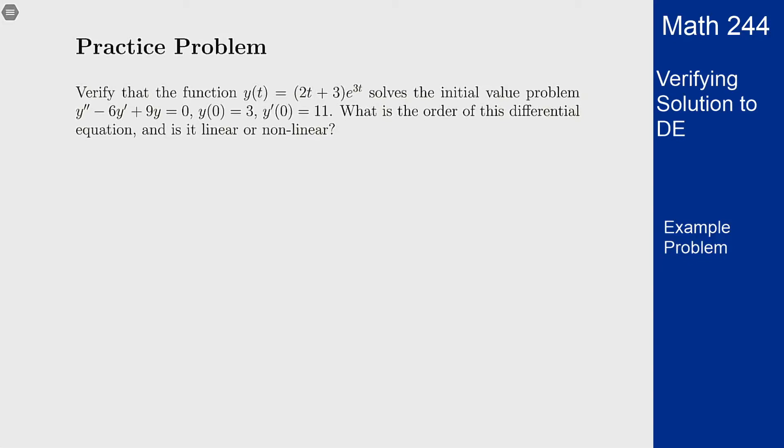In this example we want to verify the function y(t) = (2t + 3)e^(3t) solves the initial value problem y'' - 6y' + 9y = 0 with y(0) = 3 and y'(0) = 11. Now we need to say what the order of the differential equation is and if it's linear or non-linear.